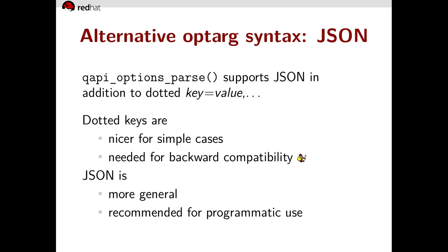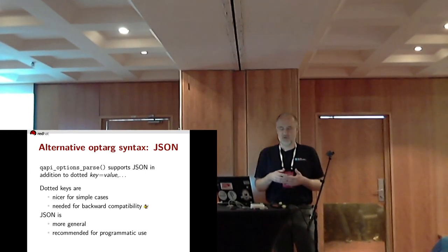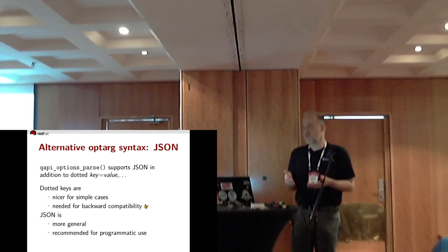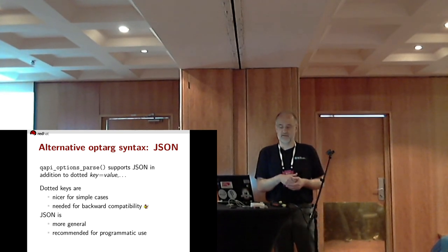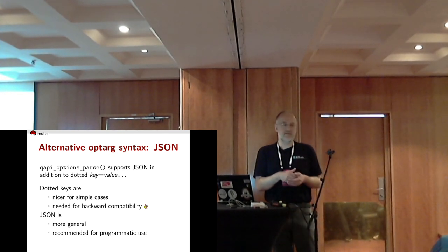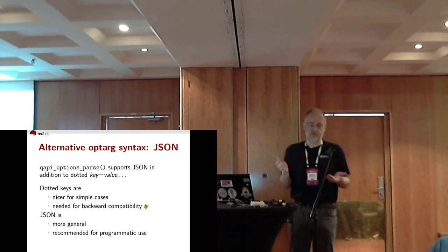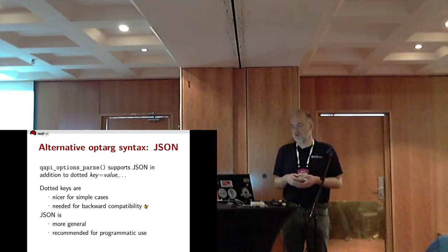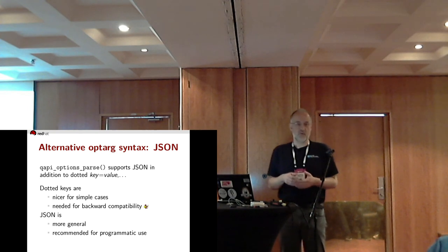I mentioned that dotted keys can't express all JSON objects, so I made qapi_options_parse support JSON in addition to dotted keys. Dotted keys are nicer for simple cases and are needed for backward compatibility, but JSON is more general and recommended for programmatic use.